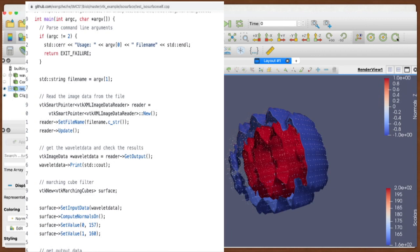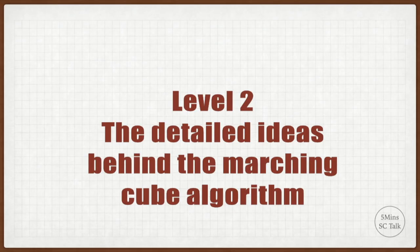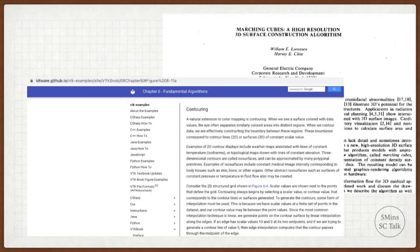From the example shown in level 1, we have some ideas about how to use the VTK library to execute the marching cube algorithm. The goal of level 2 is to understand the key ideas behind this algorithm and how it is implemented. We used two references in this video. The first is the VTK document online about the marching cube algorithm. The second reference is the original paper that describes the marching cube algorithm, a high-resolution three-dimensional surface construction algorithm.